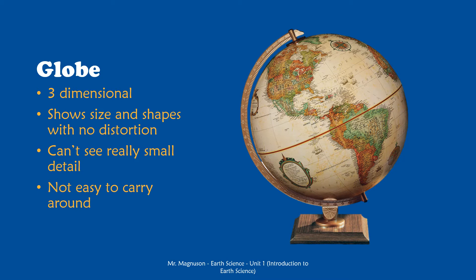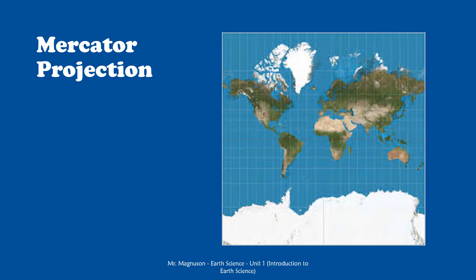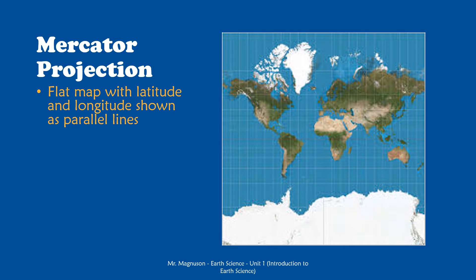Something that would be much easier to carry in your pocket is the next type of map: the Mercator projection. This is a classic map that most people see when they look at a map of the earth, and in fact most maps you look at today are Mercator projections. The important thing here is that the lines of latitude and longitude are shown as parallel lines. Remember, while latitude is parallel on the globe, longitude comes together at the poles and is furthest apart at the equator.